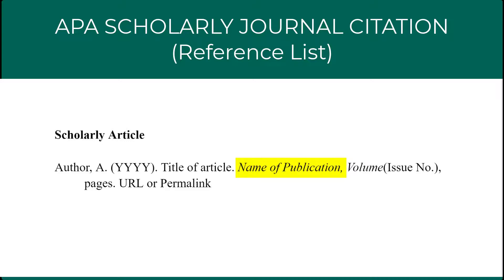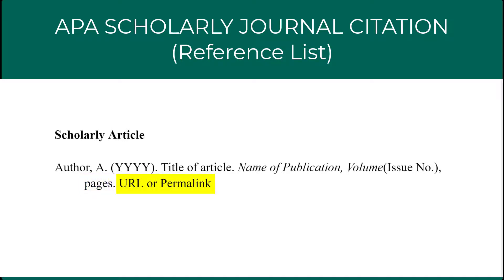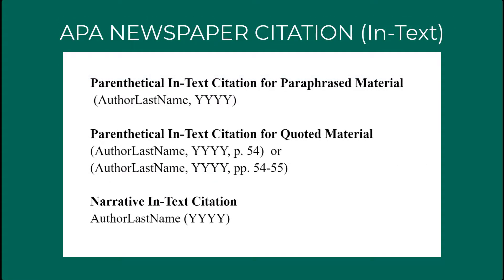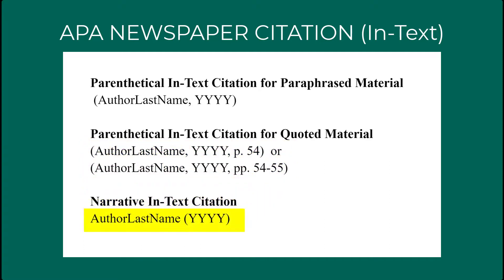Follow the name of the publication with a comma, followed by the volume of the journal in italics, followed by the issue number in parentheses if available, followed by a comma, followed by the page numbers on which the article appears. If the article is an electronic publication or was retrieved from a database, follow the page range with a period and include the URL or permalink to the article. If paraphrasing, include the author's last name, followed by a comma, followed by the year of publication in parentheses. If including a direct quote, also include the page number from which you are quoting. If you introduce the author as part of the text, follow this with the year of publication in parentheses.